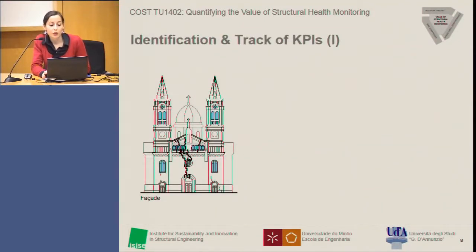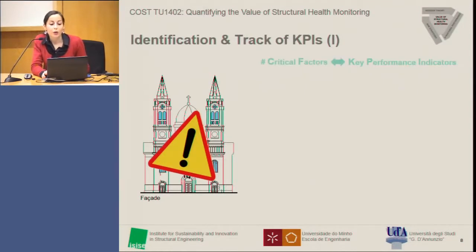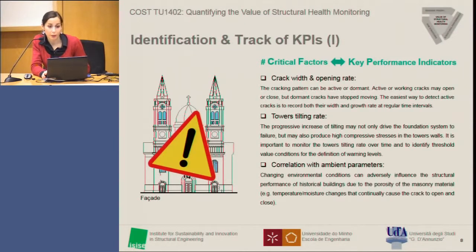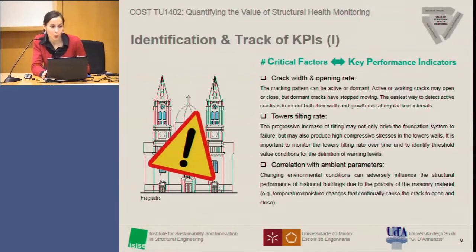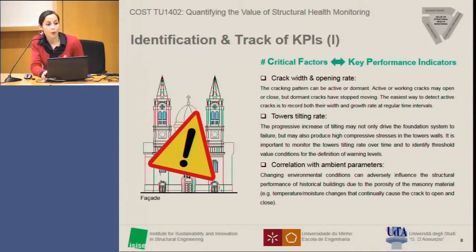The experimental campaign showed that the most active part of the church was exactly the facade. Both crack width and opening rate, as well as the tilting of the towers, were judged as critical factors reflecting the structural performance of the church, and were identified as key performance indicators. Together with these, we also decided to take into account the correlation with ambient parameters — an important factor for historical buildings, since masonry is a porous material and historical buildings can be extremely prone and sensitive to changes in environmental conditions, especially temperature and moisture content, which can cause opening and closing of cracks.